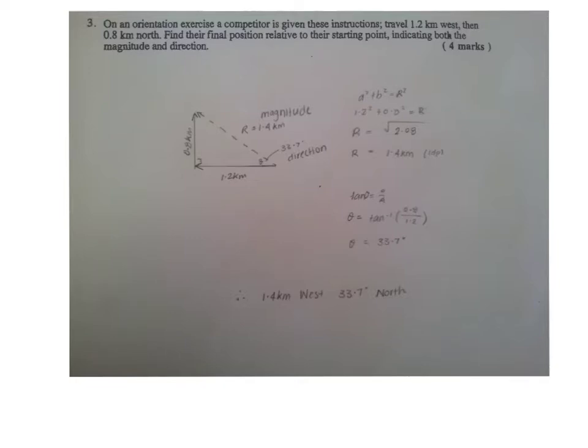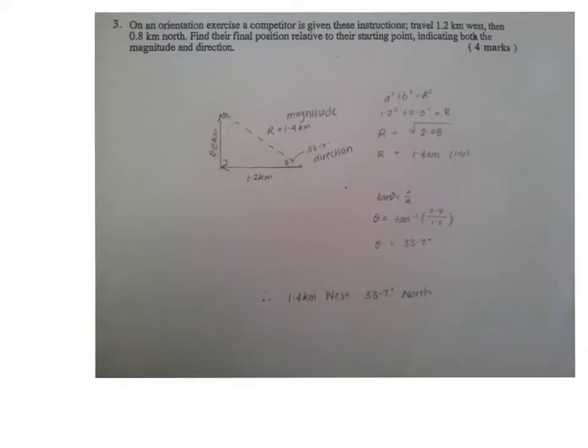In this question it says that you've got to give your answer to find their position relative to their starting point indicating both the magnitude and direction. Now you've determined the magnitude was 1.4km by using Pythagoras' theorem.